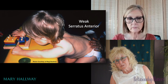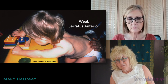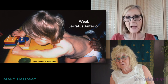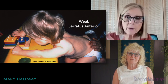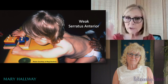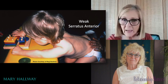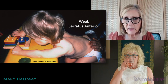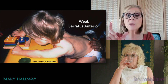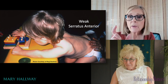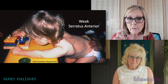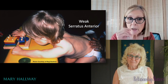That latissimus dorsi is weak and that teres minor is tight. And if you would see this child in weight bearing — he's actually leaning on his arm, not really in weight bearing on forearms — but if he was weight bearing on forearms, we'd be seeing shortening because of that tight teres with the scapula winging.